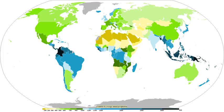The wet, or rainy, season is the time of year, covering one or more months, when most of the average annual rainfall in a region falls. Areas with wet seasons are dispersed across portions of the tropics and subtropics. Savannah climates and areas with monsoon regimes have wet summers and dry winters. Tropical rainforests technically do not have dry or wet seasons, since their rainfall is equally distributed through the year. Some areas with pronounced rainy seasons will see a break in rainfall mid-season when the intertropical convergence zone or monsoon trough moves poleward during the middle of the warm season.